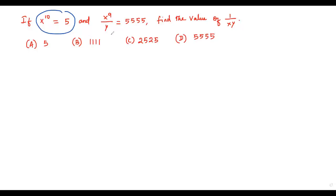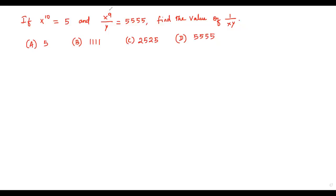How do we find the value of 1 over xy using this information? From the second equation it's clear that x^9/y equals 5555, so wherever we get the expression x^9/y, we can plug in 5555. Now, looking at the first equation x^10 = 5, we want to manipulate it so that the exponent 10 becomes 9 and we introduce y in the denominator.